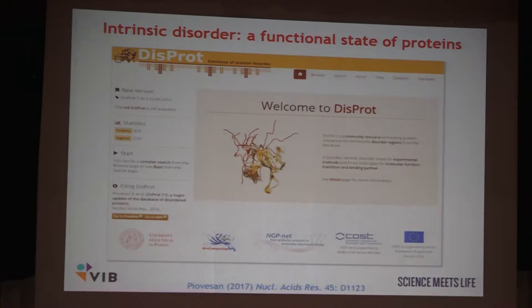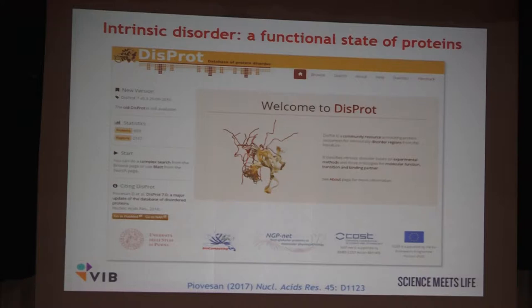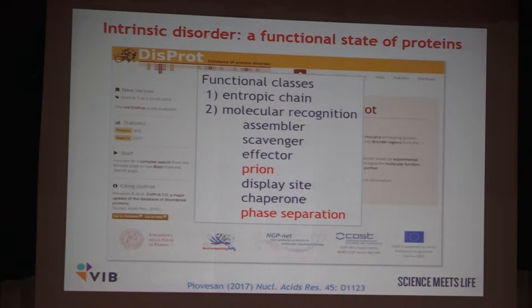Last but not least, I would like to mention a database initiated by Keith about 15 to 20 years ago where he and colleagues collected biophysical evidence for the existence of disorder in more than a thousand proteins. Because of lack of funding and resources, it slowed down recently. But we have managed to inject new energy into this database with the help of Sylvia Toceptor in Padova. The database has been revived, updated, and upgraded. Now not only can you find disordered proteins and regions, but also functional classification, including prions and proteins that can phase separate — an upcoming field within the IDP field.